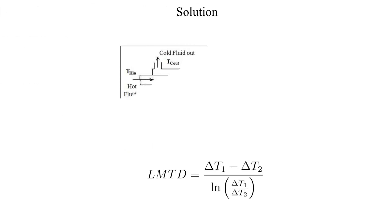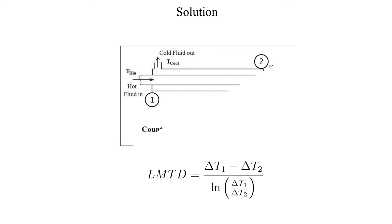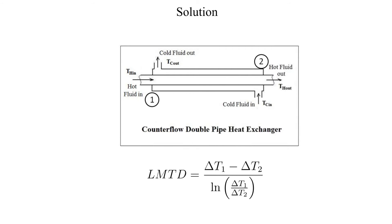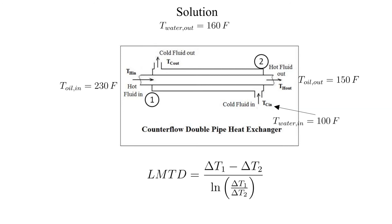Now let's calculate the log mean temperature difference. The equation is shown here. Remember, the subscripts 1 and 2 denote locations on the heat exchanger, not fluids. In this example, location 1 is the left side, which is the oil inlet and water outlet side. Location 2 is the right side, which is the oil outlet and water inlet side.